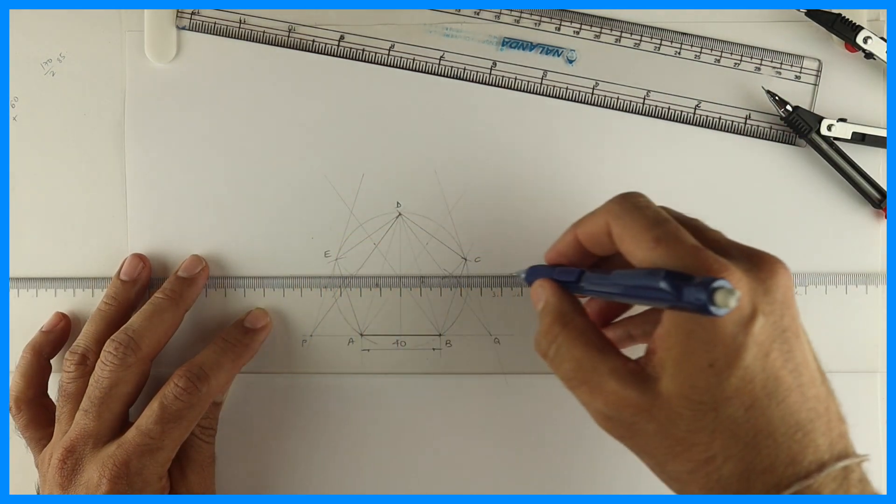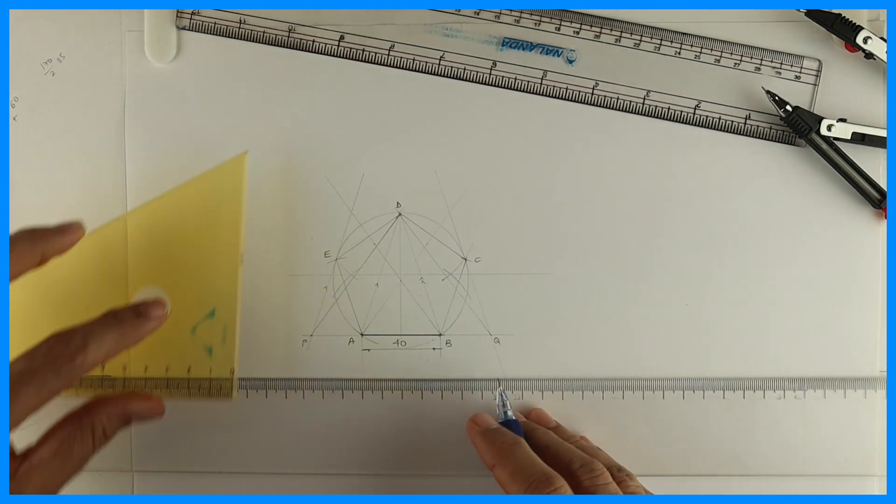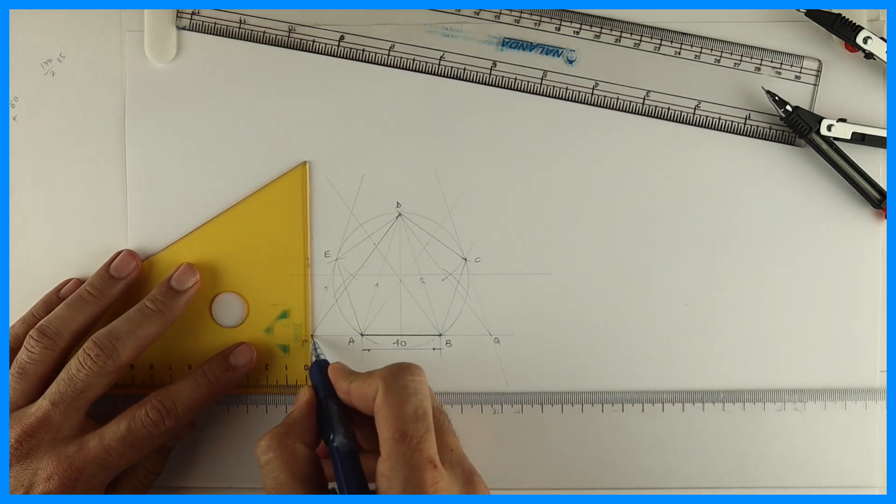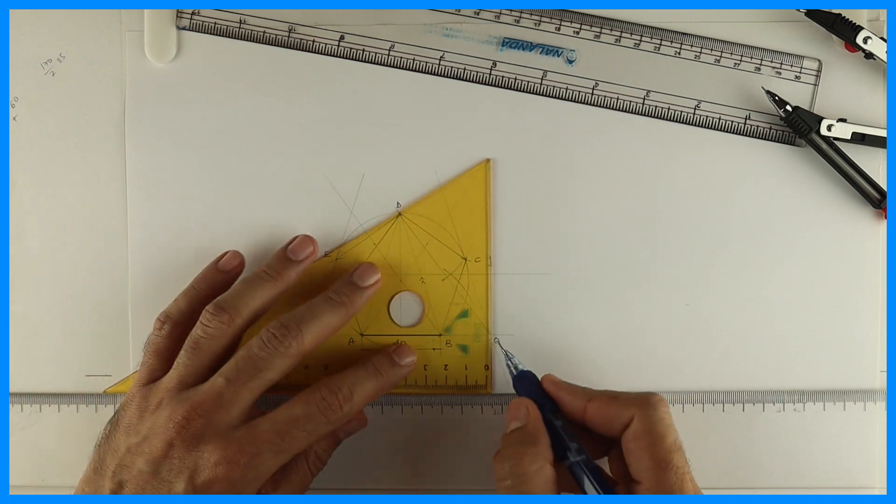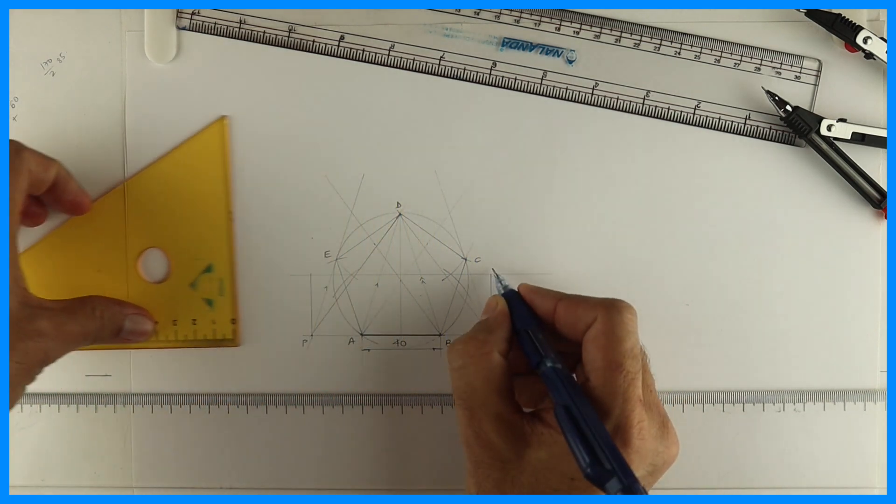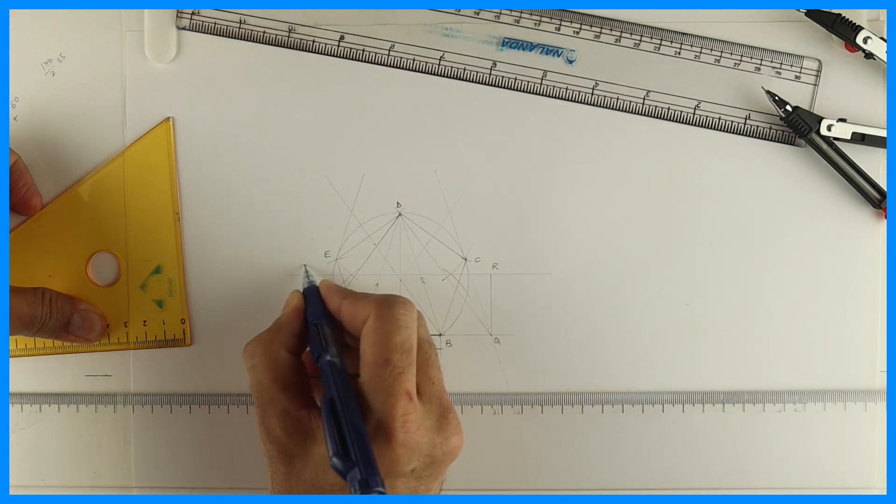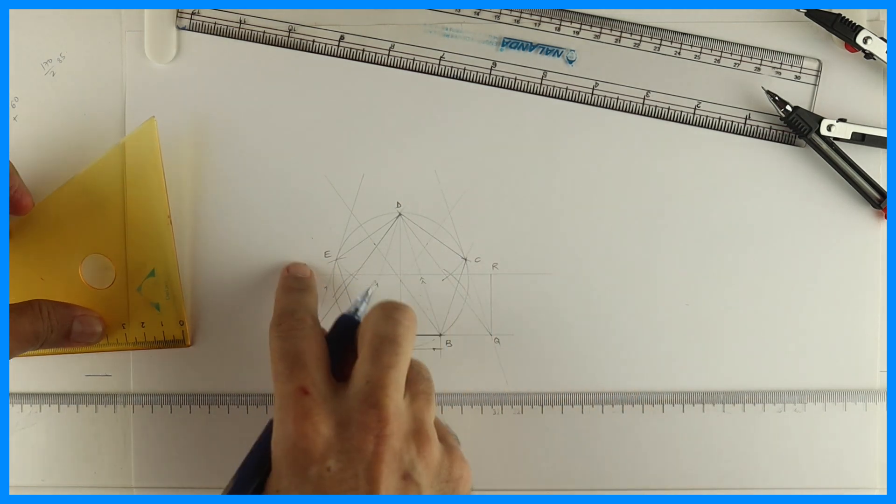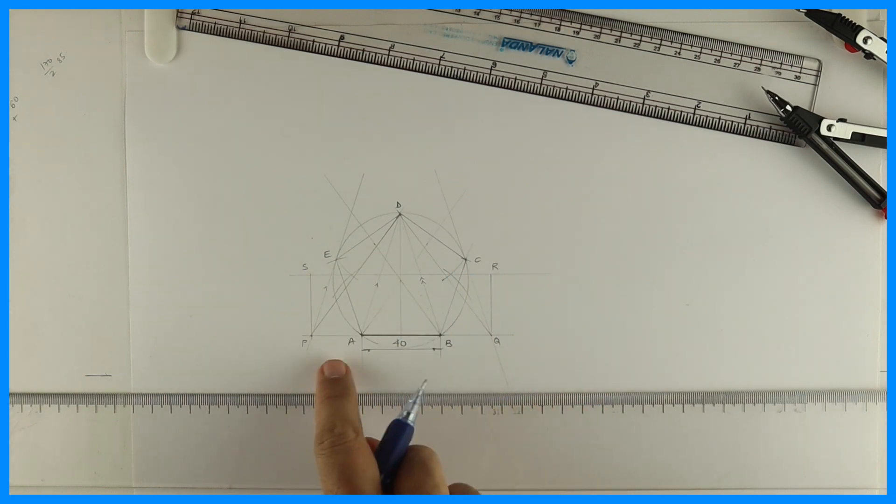See this, so when you take height into half and you extend this, what you will get, you will get rectangle. So we got rectangle PQRS, so we have converted triangle PQD into rectangle PQRS.